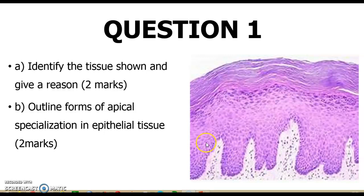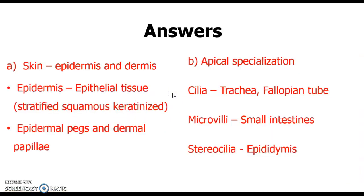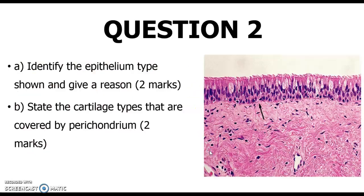In terms of the apical specializations, you have the cilia, the microvilli, and the stereocilia. This is respiratory epithelium, so everybody will see the pseudostratified columnar ciliated epithelium with goblet cells which produce mucus.